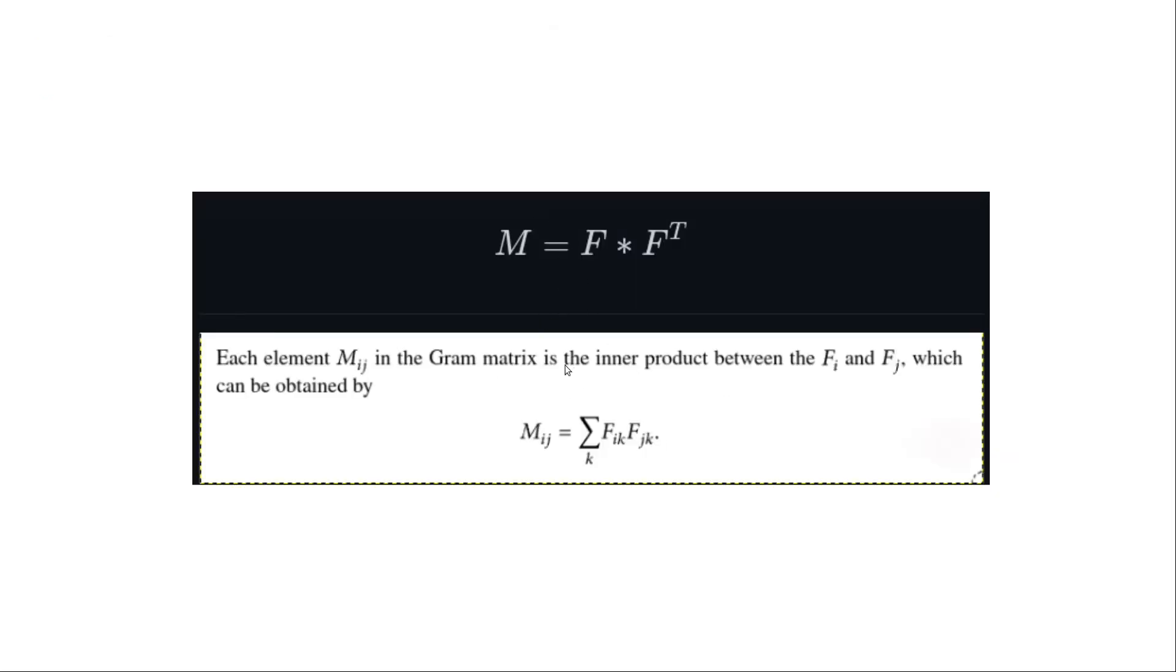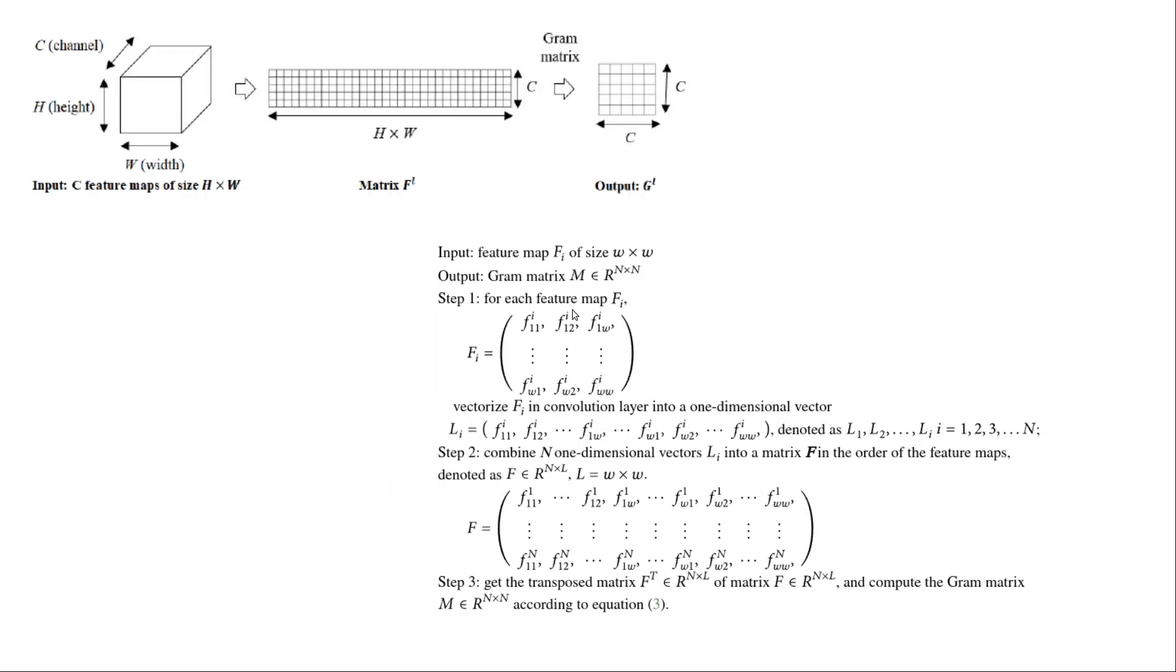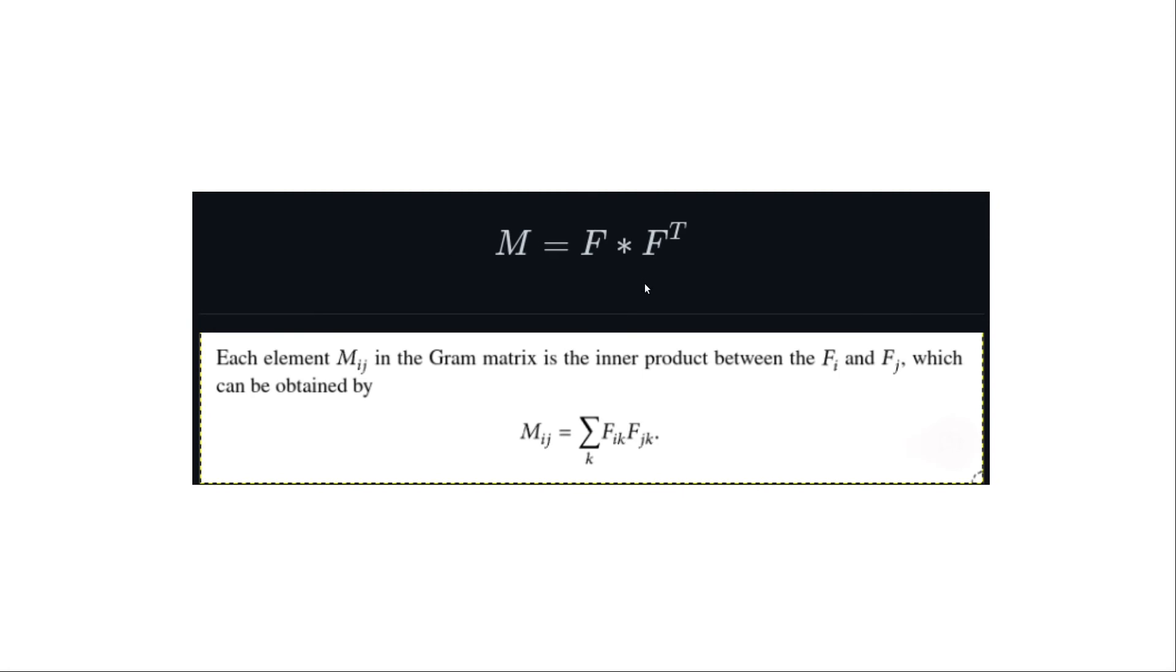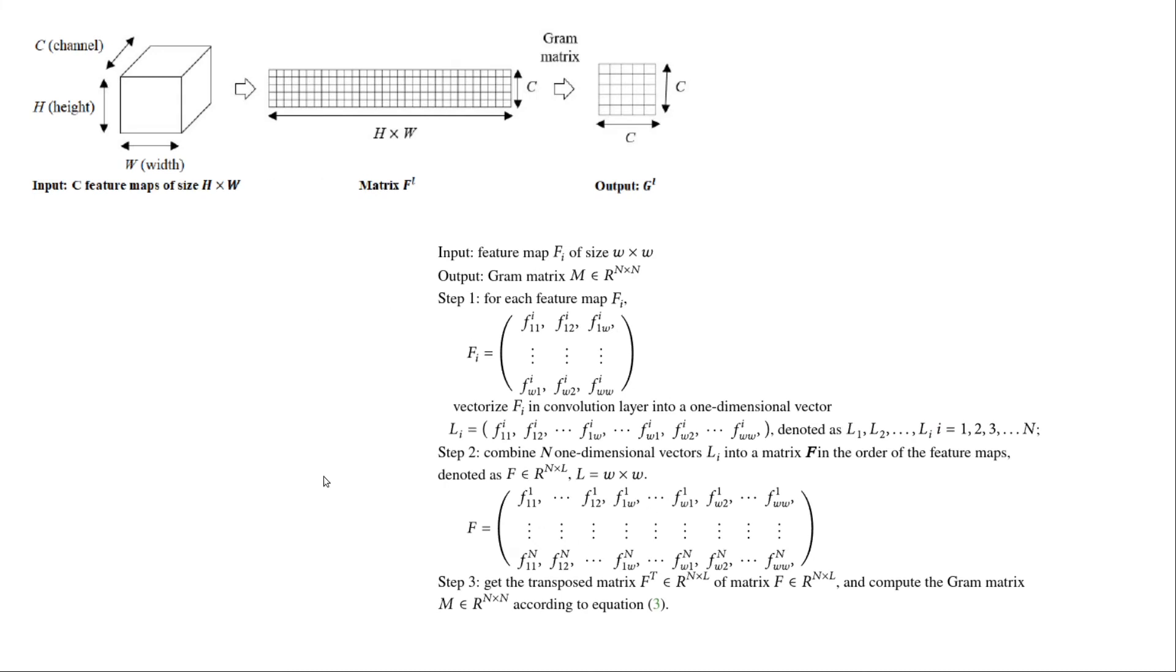So this is that equation three that I'm talking about. Once we calculate the matrix F here and then take a transpose F^T, the Gram matrix will simply become the dot product between them. So each element M_ij in the Gram matrix M is the inner product of F_i and F_j, which can be obtained with this expression. This was very mathematically represented.